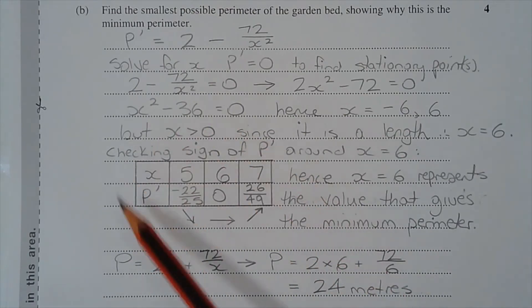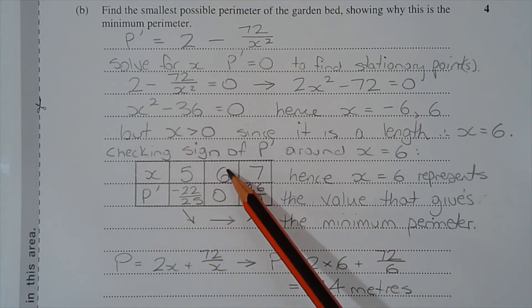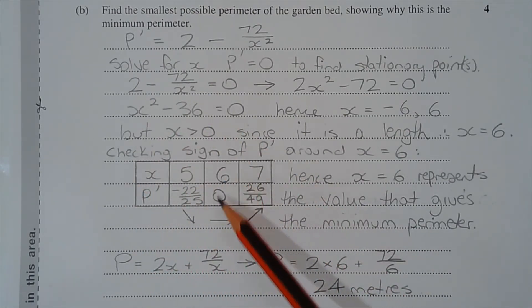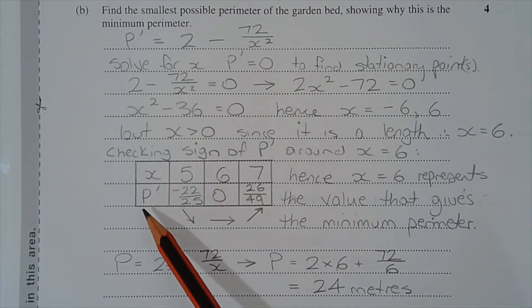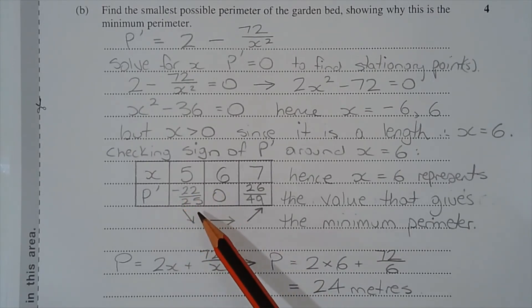And I've summarized those results in a table of values. So at x equals 6, p dash is equal to 0, so that's the stationary point. At x equals 5, so to the left of x equals 6, p dash is equal to negative 22 over 25. All you have to do is substitute x equals 5 into the equation for the first derivative, and that's a negative gradient there.